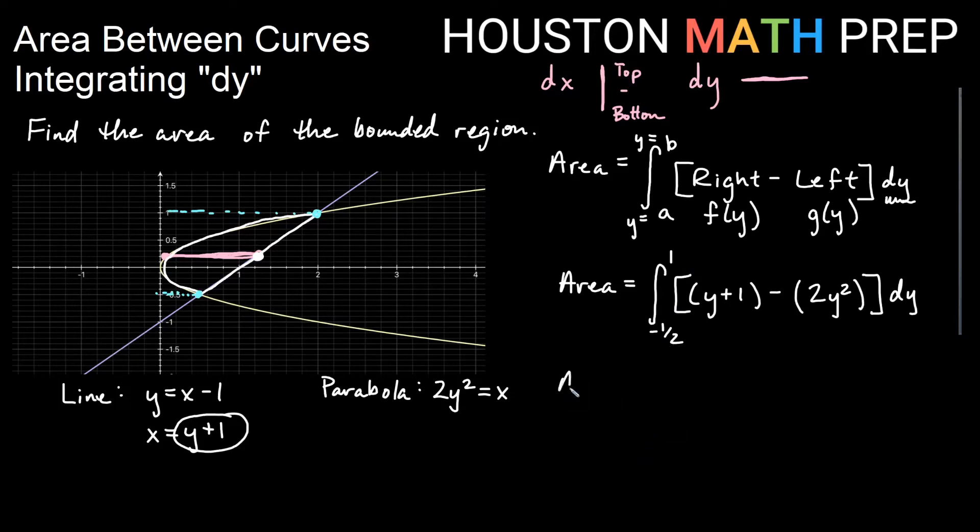So my bounds are negative 1 half to 1. Now I can just do the integration. This is focusing on area between curves, so I'm just going to do the integral. If I integrate this, I will get integral of y as y squared over 2. Integral of 1 would be y minus 2y squared. So that would be y squared would become y cubed over 3 for the power rules. So I would get 2 thirds y cubed.